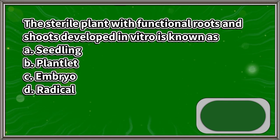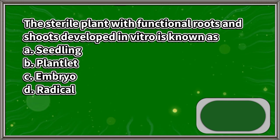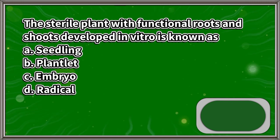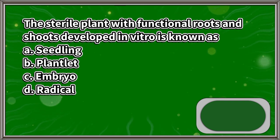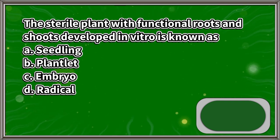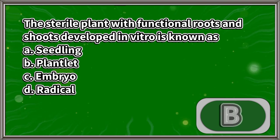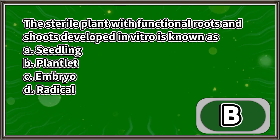The sterile plant with functional roots and shoots developed in vitro is known as: A. Seedling, B. Plantlet, C. Embryo, D. Radicle. The answer is letter B.